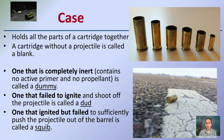A cartridge without a projectile is called a blank. In different types of cartridges, they're not always all together and serve different purposes. For example, if we have a cartridge that's completely inert — meaning it contains no active primer and no propellant — that's called a dummy, used just to represent the same size. When a cartridge has failed to ignite or shoot off the projectile, it's called a dud, meaning the components didn't work together and it didn't fire.